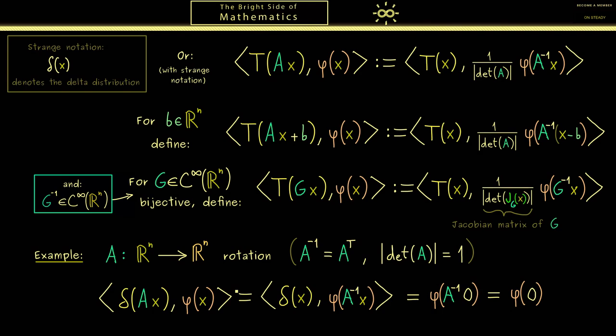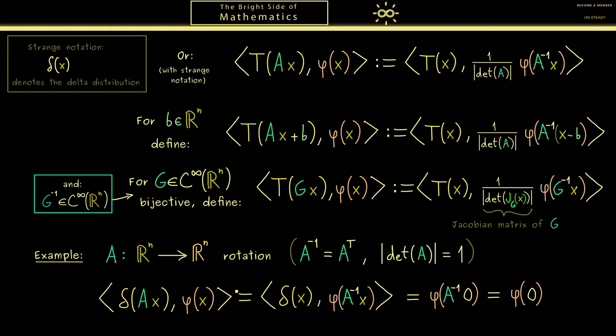However, there you see A inverse of 0 is still 0, so we have phi of 0. However, of course phi of 0 can be written with a delta distribution. It's simply delta applied to the test function phi.